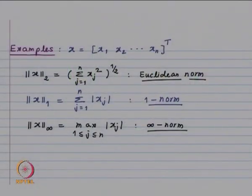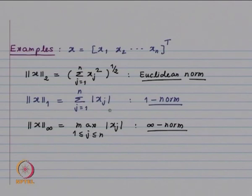Now let us look at some examples of norms. You can define norms in various manners; we are going to consider three norms. One is the Euclidean norm, the second is known as the 1-norm, and the third is the maximum norm or infinity norm. The reason we consider 1-norm and infinity norm will become clear when we look at corresponding matrix norms. The Euclidean norm is (Σⱼ xⱼ²)^(1/2), norm₁(x) = Σⱼ |xⱼ|, and norm∞(x) = max|xⱼ| for 1 ≤ j ≤ n.